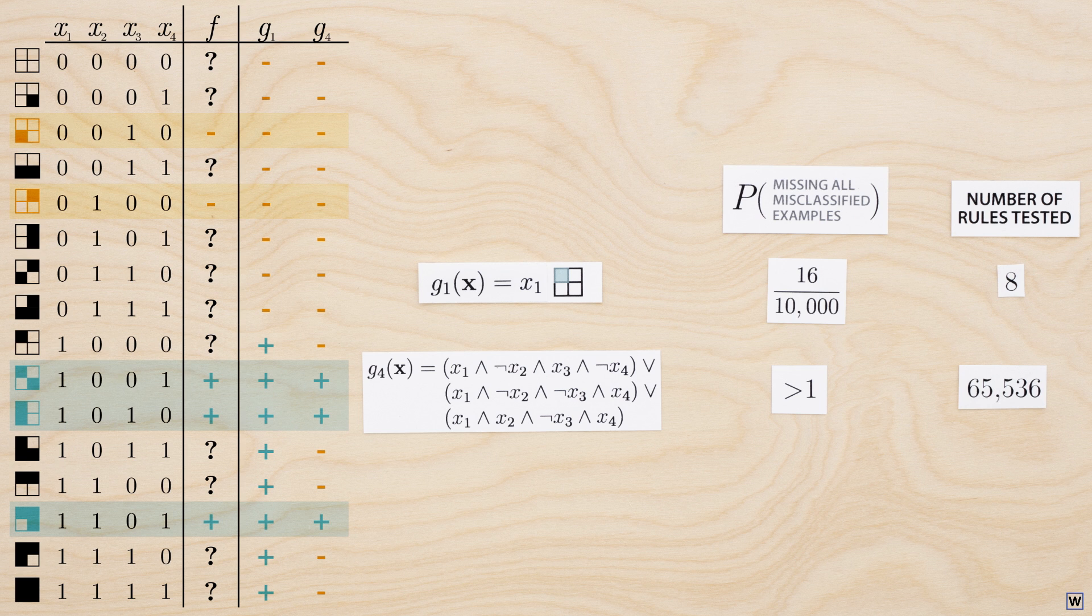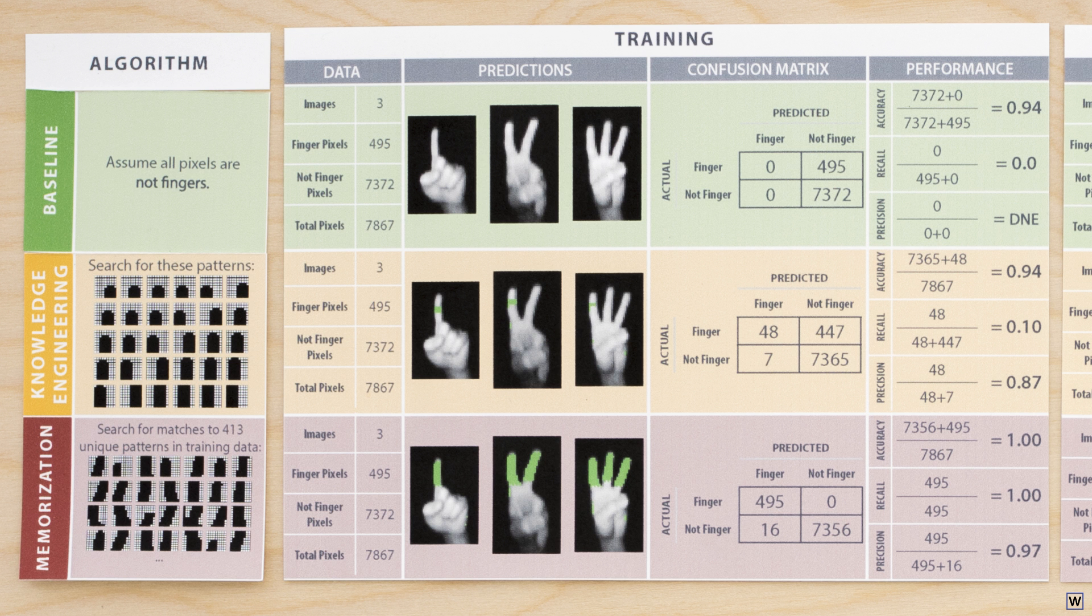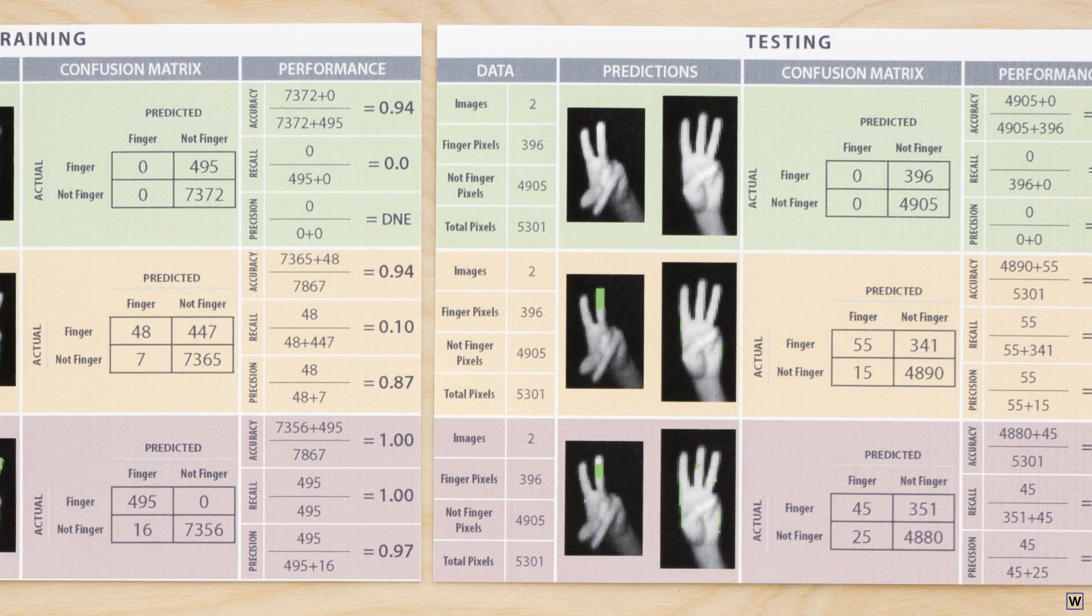In many ways, our baseline strategy is the ultimate simple rule. When choosing this rule, we really only considered two possible rules. Either all examples are fingers, or all examples are not fingers. Only choosing between two rules means that the probability of our rule getting lucky is very low, and our rule should generalize well. And it does.